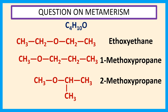Compounds from the same homologous series having the same molecular formula but possessing different alkyl groups or aryl groups on either side of the functional group is known as metamerism. Compounds which possess this type of isomerism are known as metamers. Thank you for watching this video.